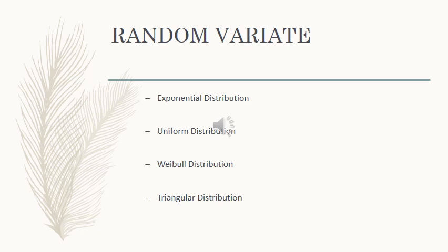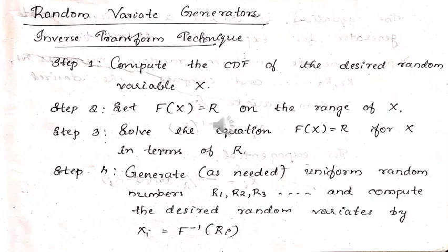There is a mechanism for obtaining the random variate called the inverse transform technique, which we are going to see in the next slide. The inverse transform technique has an algorithm with four different steps. For this inverse transform technique we require the CDF.